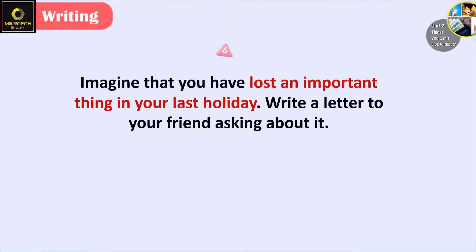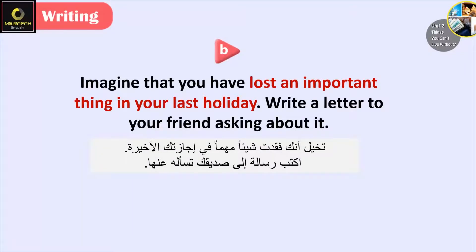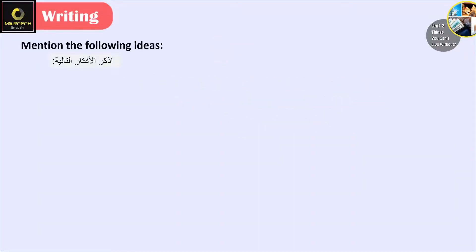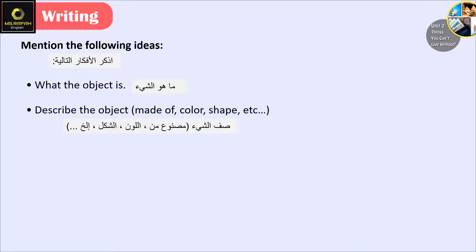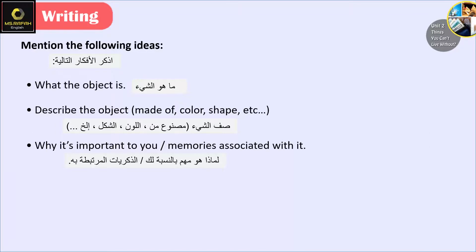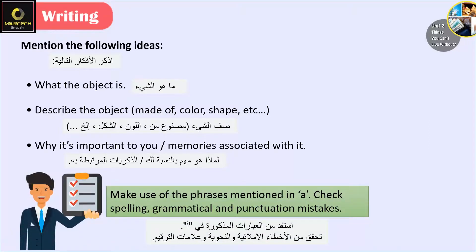Question B: Imagine that you have lost an important thing on your last holiday. Write a letter to your friend asking about it. Mention the following ideas: what the object is, describe the object — its material, color, shape, etc. — why it is important to you, and memories associated with it. Make use of the phrases mentioned in part A. Check spelling, grammatical, and punctuation mistakes.